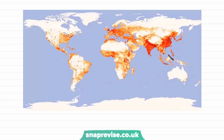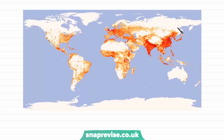We can see really high population densities in China, India, and also in Europe. We also have very sparse population densities in areas where the environment isn't suitable for human life, such as in the Sahara Desert, northern Canada and Alaska, Siberia, and Australia. The areas of white on the map are mostly where we find the world's largest deserts, whether hot or cold deserts.